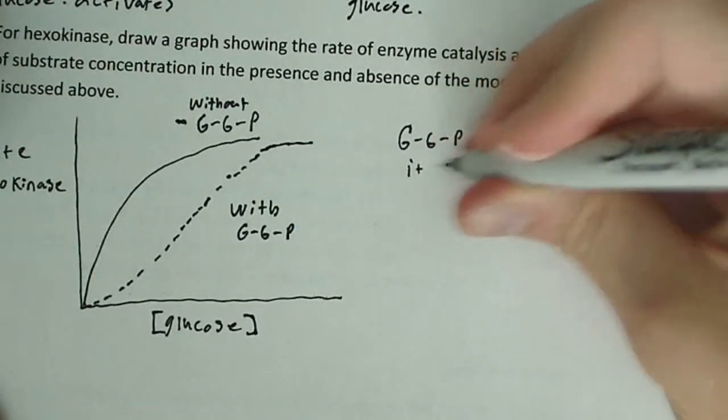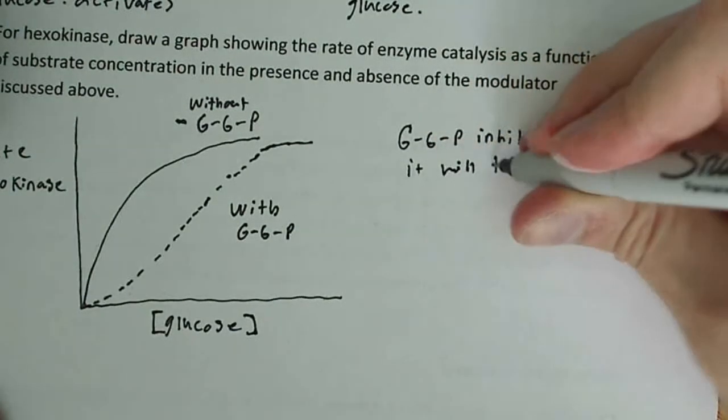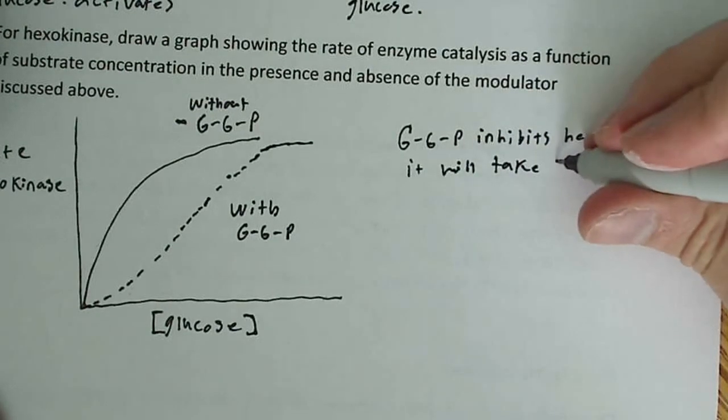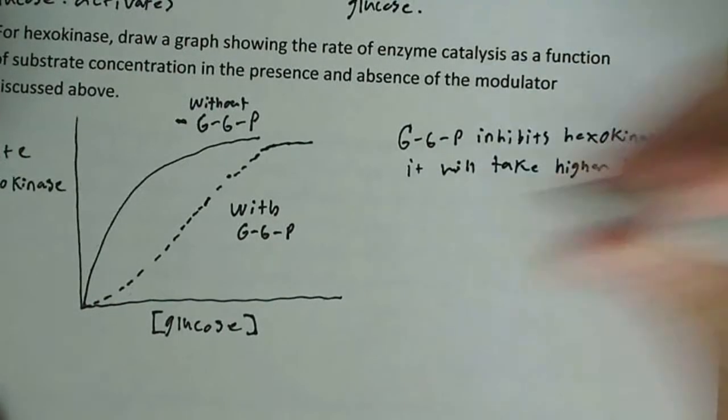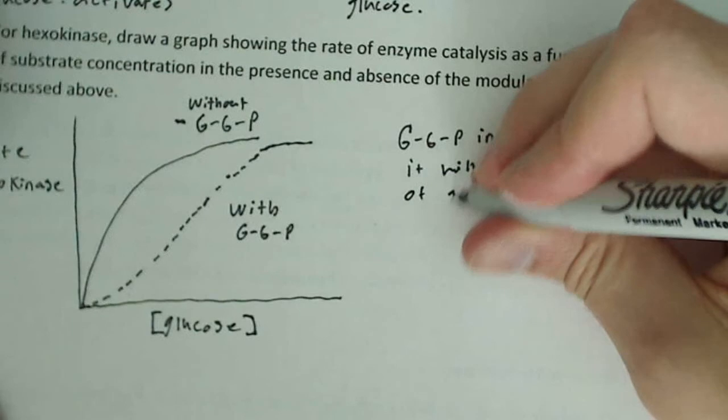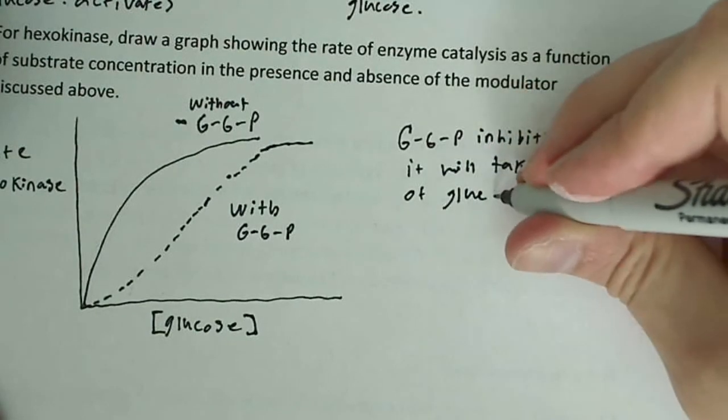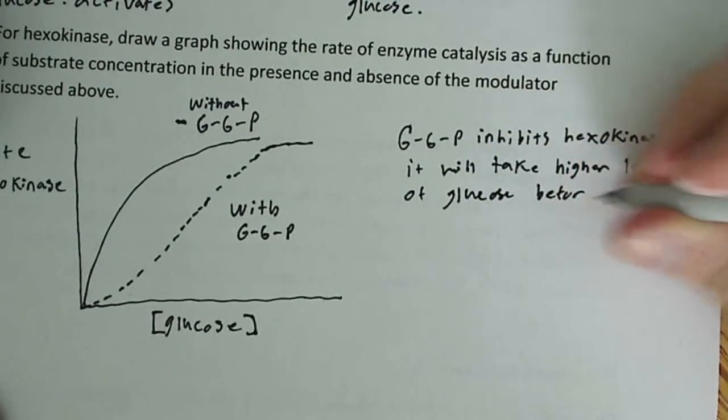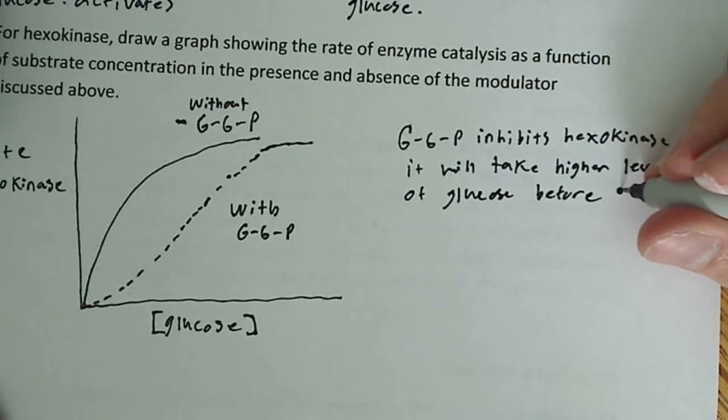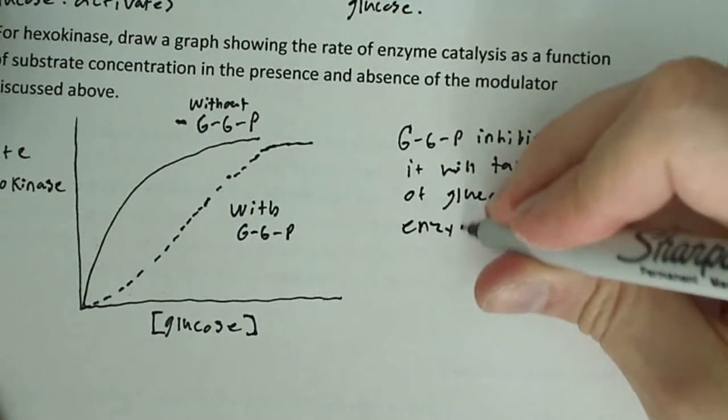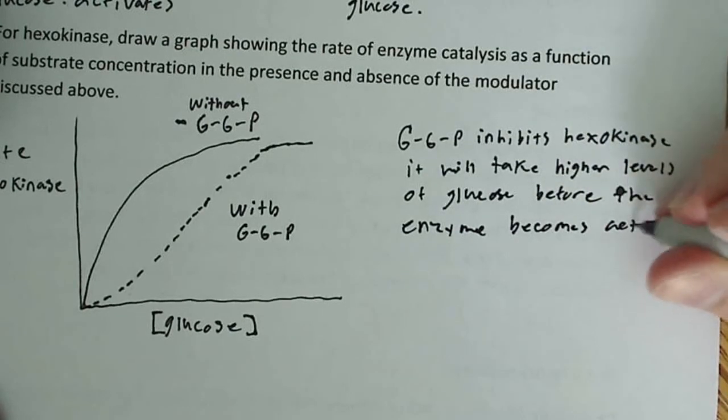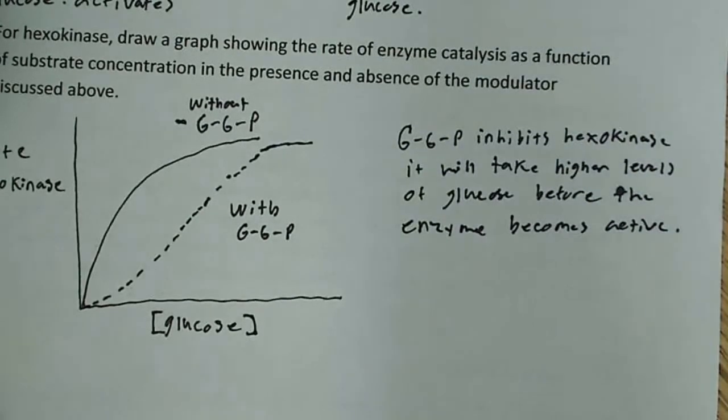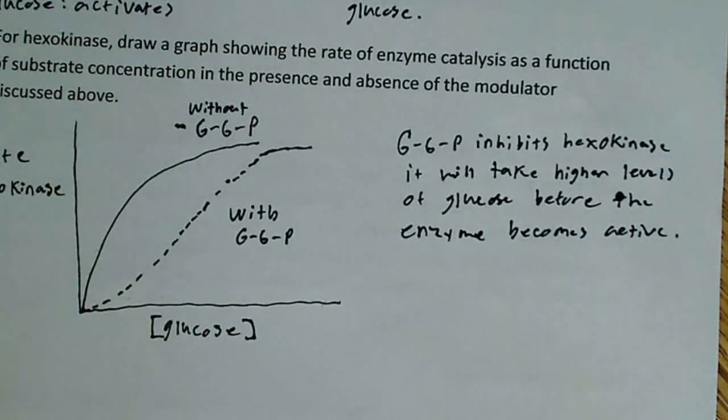So it will take higher levels of glucose before the enzyme becomes active. And what you can see in the graph here is that there's just a shift. It becomes more sigmoidal.